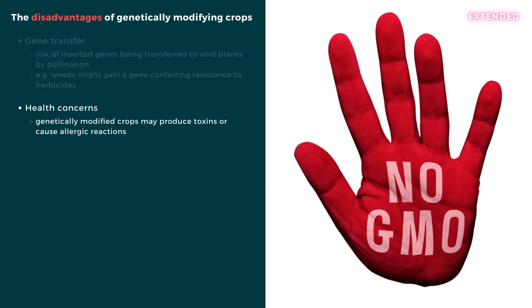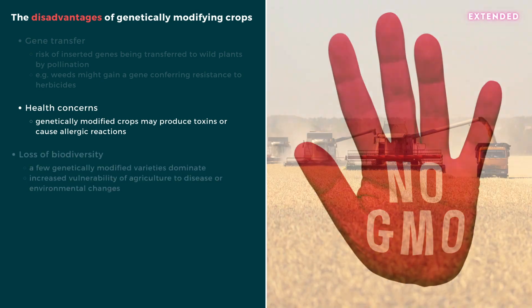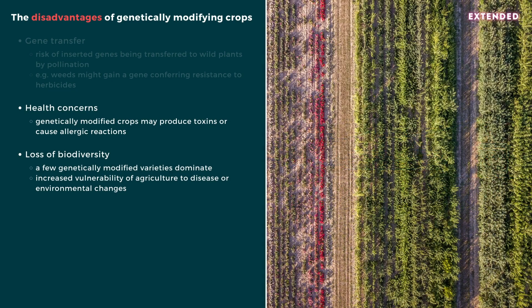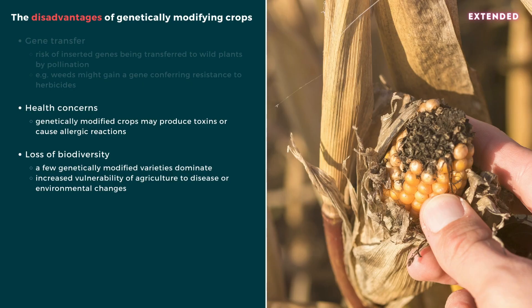Health concerns: many people are concerned that genetically modified crops produce molecules that could be toxic to humans or cause allergic reactions. Loss of biodiversity: a small number of genetically modified crops dominate the market, making agriculture more vulnerable to environmental pressures. Previously, if one species were wiped out by a disease or drought, other varieties would survive. By comparison, over-reliance on a single genetically modified crop would leave farmers with no backup.